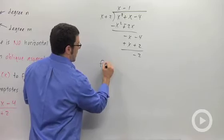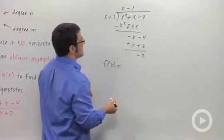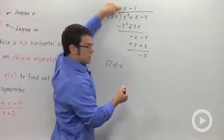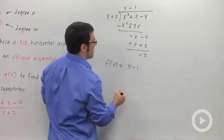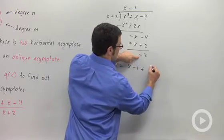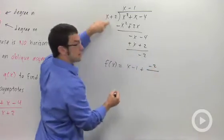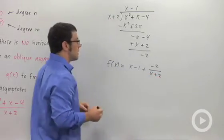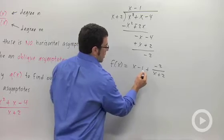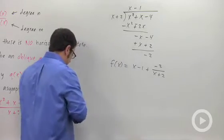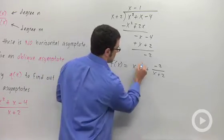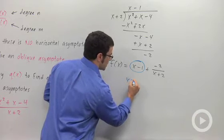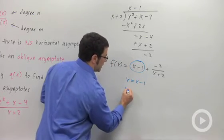What that means is that f(x) is actually equal to this quotient, x minus 1, plus this remainder, negative 2, over this divisor, x plus 2. This is going to be my oblique asymptote right here, the x minus 1. So y equals x minus 1 is an oblique asymptote.